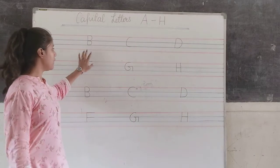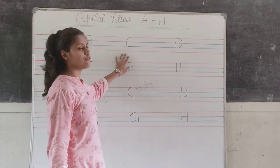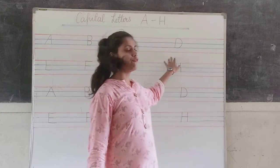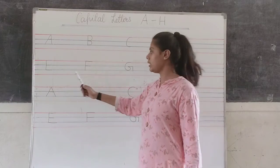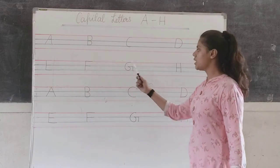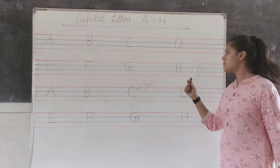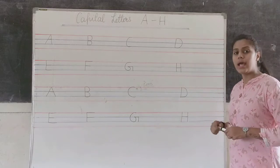A for apple. B for ball. C for cat. D for dog. E for elephant. F for fish. G for grapes. H for horse.